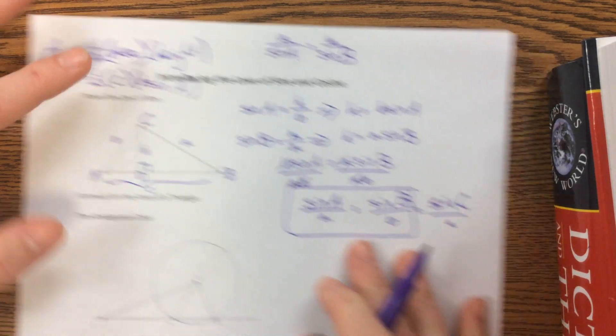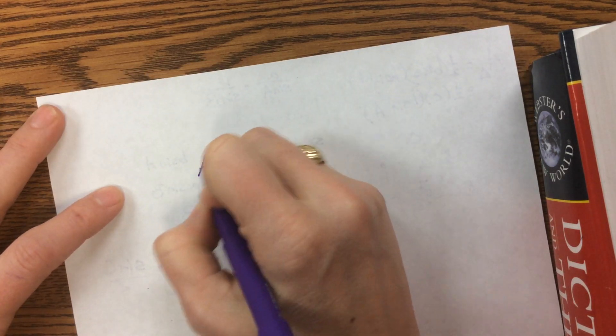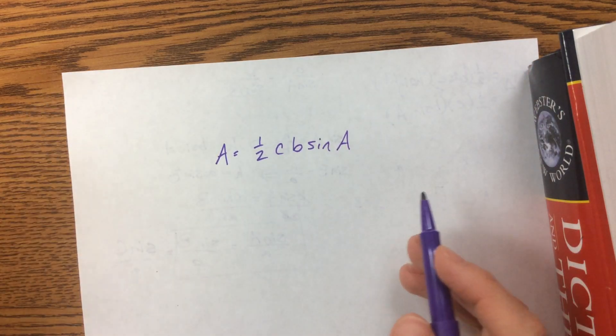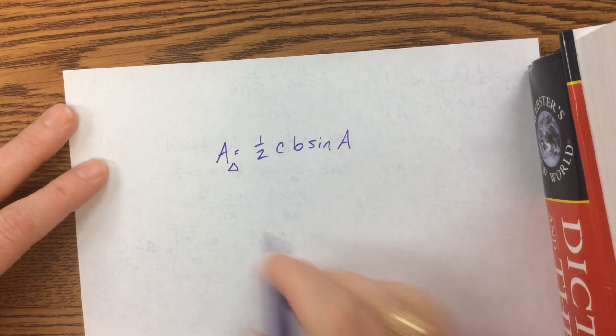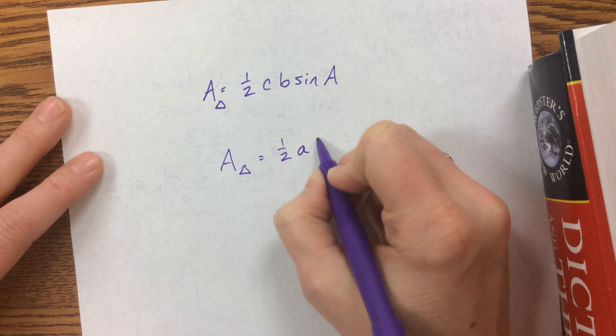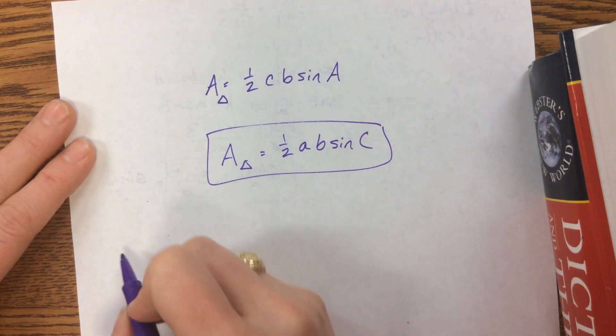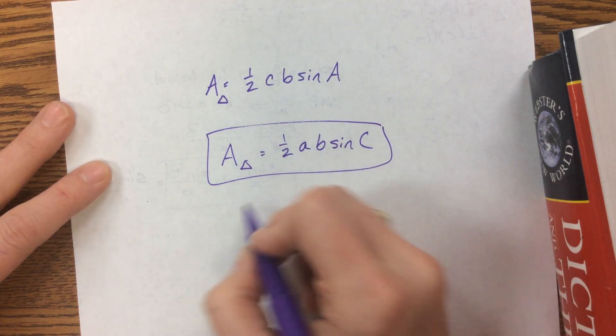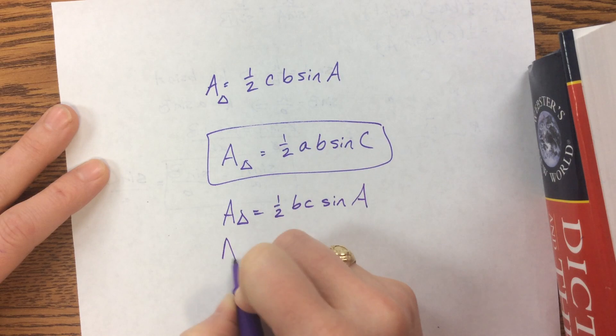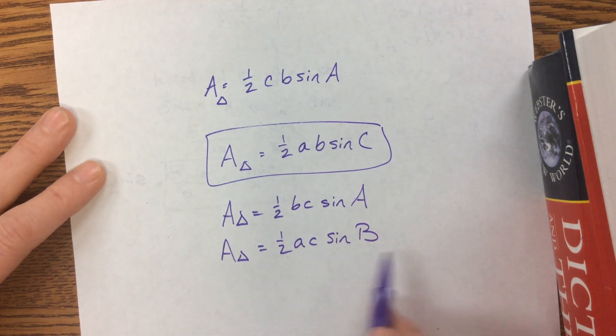We could say B sine of A. What we just came up with was one half C B sine A. The way that I typically think of it though, is that the area of a triangle is equal to one half, and then you need all three letters. I'll say it can be A B sine C, and this is my go-to for area of a triangle, that I need to know two sides and the angle in between them. You could also say that's equal to one half B C sine A, or you could say the area of a triangle is equal to one half A C sine B. Notice I'm just getting all three letters that show up here.